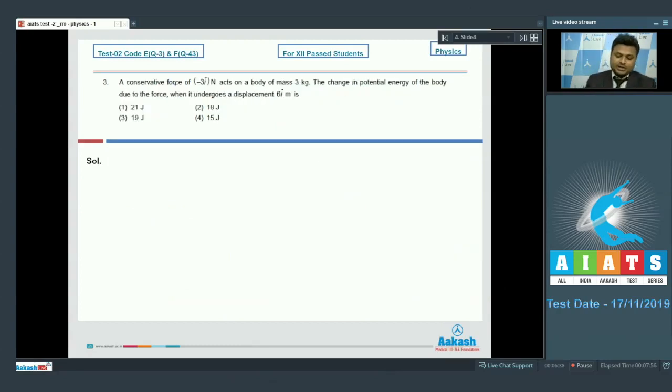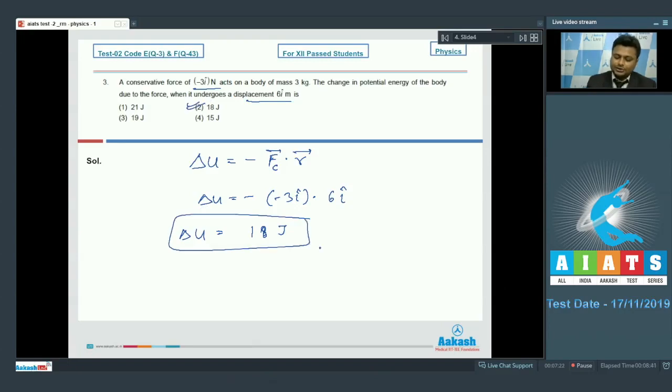Moving on to the next question, that is question number 3. A conservative force of minus 3 i cap newton acts on a body of mass 3 kilogram. The change in potential energy of the body due to the force when it undergoes a displacement of 6 i cap meter will be what? Now we know very well change in potential energy is related with the conservative force as delta u is equal to minus of fc dot r, where fc is conservative force and r is displacement. Delta u is equal to minus fc is given minus 3 i cap dot displacement is given 6 i cap. Now 6, 3 by 18, minus minus become plus, we will get 18 joule as our answer. So change in potential energy will be 18 joule, option number 2.